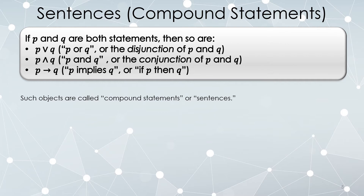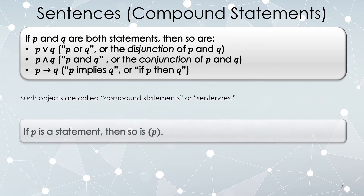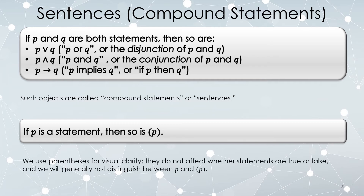Any time you take statements and make larger statements out of them according to these constructions, it's called a compound statement, or sometimes called a sentence. Another rule is that you can always put parentheses around a statement and that is still a statement. Parentheses are just about visual clarity for the reader; however, they do not affect whether statements are true or false.